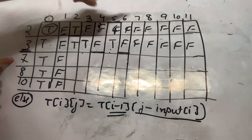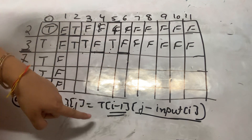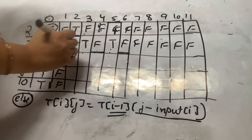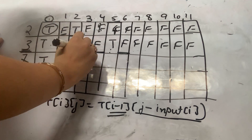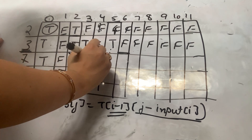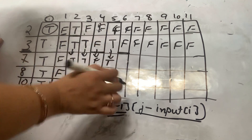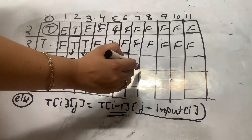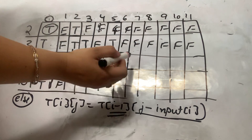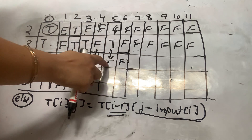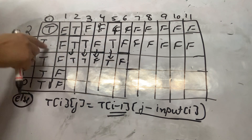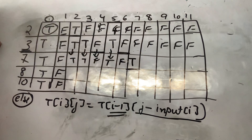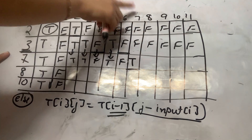Now for element 7: before column 7, we just copy from the row above — copying true, true, false, and so on. For column 7, move back 7 places in the previous row and check. That entry is true, so this becomes true — a sum of 7 is possible when 7 is included.